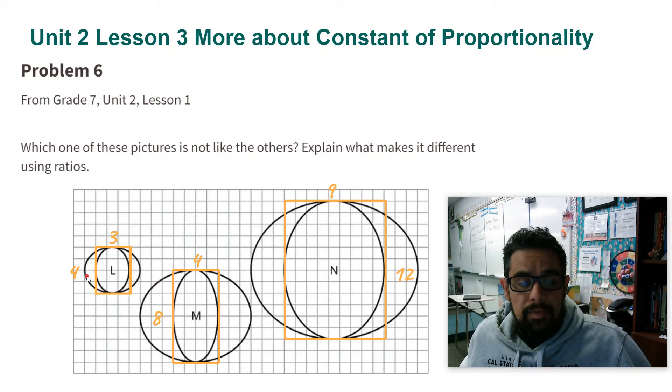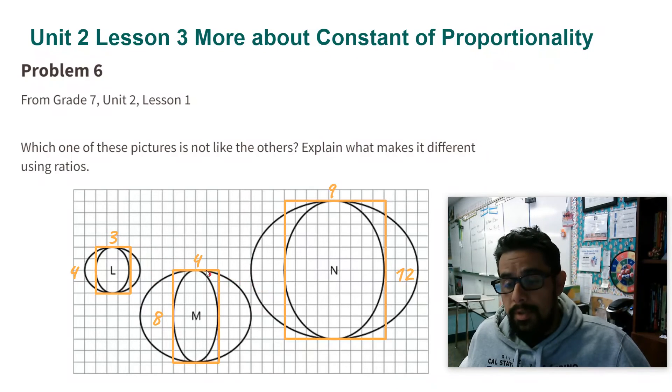You can see here 4 times 2 is 8, but 3 times 2 is not 4. So these two are not the same. 4 times 3 is 12, so it does match this one, and then 3 times 3 is 9, so it does match that one.